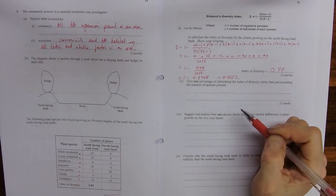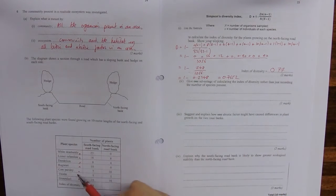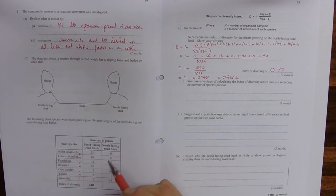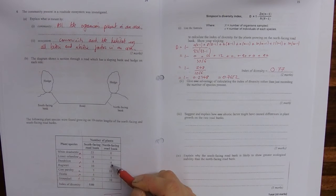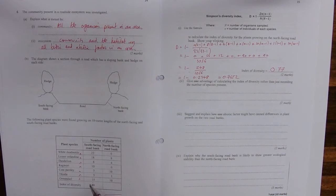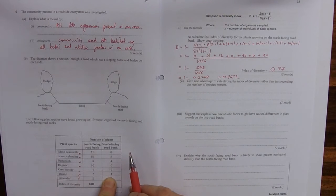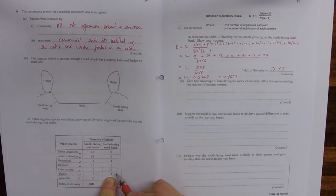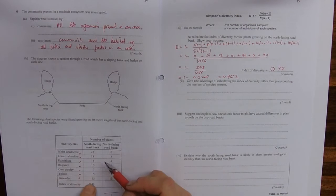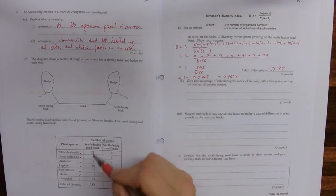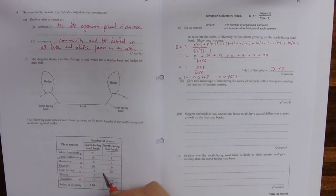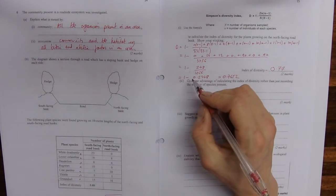Give one advantage of calculating the index of diversity rather than just recording a number of species. So if we just record a number of species, we go 1, 2, 3, 4, 5, 6, 7 there and 1, 2, 3, 4, 5 there. So 7 there and 5 there. But, you know, there's only one thistle. So that is counted as a whole big species. Whereas there's more individuals.